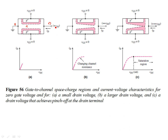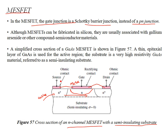The PN junction at the gate is reverse biased. As VDS increases, more charges accumulate in the N-type region, increasing the depletion width and pinching off the channel at the drain terminal. After VDS reaches saturation, the current stays constant — the current is independent of further increases in VDS because the channel is pinched off at the drain. The source and drain have ohmic contacts, while the gate has a rectifying metal Schottky contact.